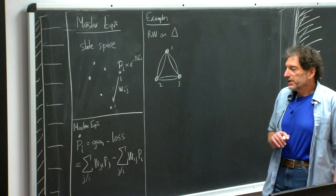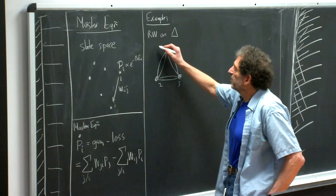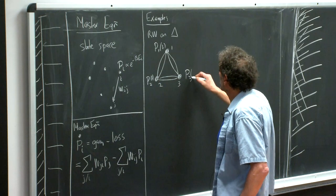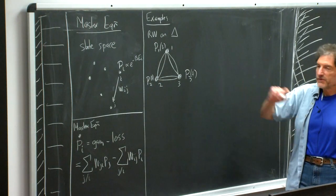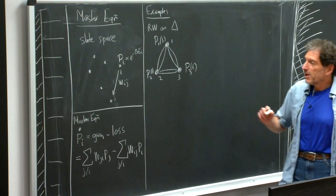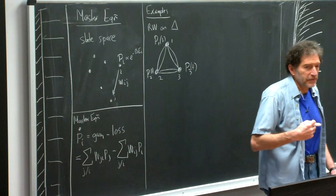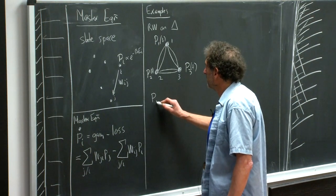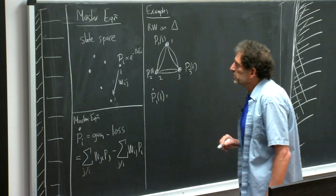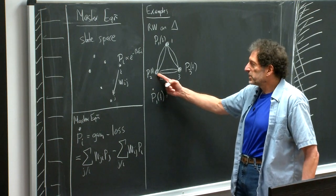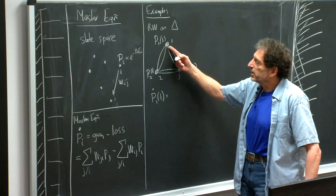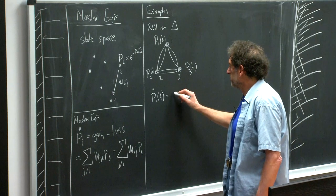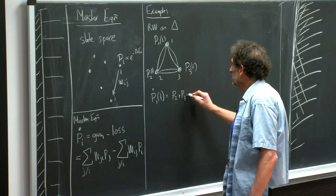Given this, let us now turn to our example of a random walk on the triangle. We have P1, P2, P3 — all time-dependent probabilities. The most general understanding is we want to compute P_I(t) at all times given some initial condition. Since this is a first order equation in time, all we need is to specify the initial condition. So: P1 dot equals P2 plus P3 minus 2P1; P2 dot equals P3 plus P1 minus 2P2; P3 dot equals P1 plus P2 minus 2P3.